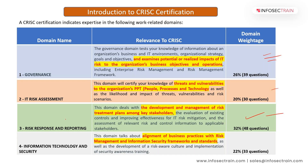Each domain is further divided into parts. Domain one is divided into Part A — Organizational Governance — and Part B — Risk Governance. Domain two, IT Risk Assessment, is also divided into two parts: Part A is IT Risk Identification, and Part B is IT Risk Analysis and Evaluation.